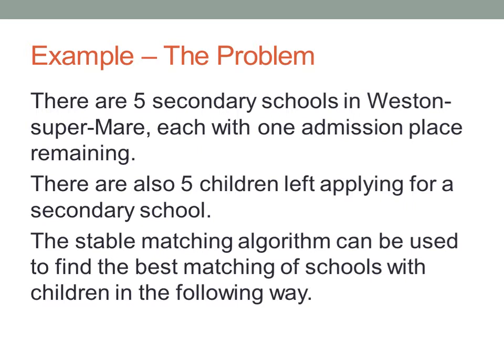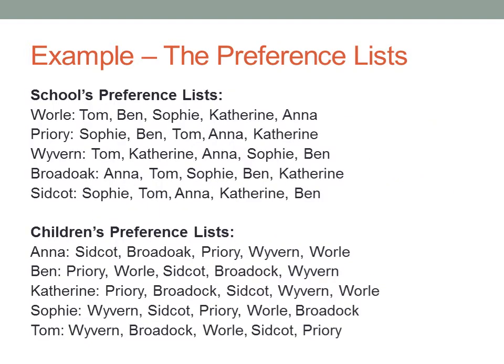The following explanation continues using the example of matching children to schools. Imagine there are five secondary schools within a town. Each school has admitted hundreds of students and only has one place remaining. There is also a list of five children who are yet to be admitted to a school. The children have already made a list of their preferred schools when applying and the schools now do the same for the children. Here are the preference lists — each school has listed their preference of child from most wanted to least and each child has done the same for schools.